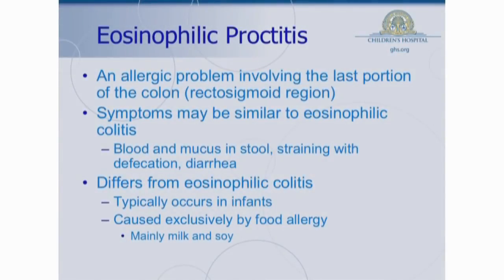Lastly, there's eosinophilic proctitis. It's an allergic problem and is usually seen in infants. It usually involves the very most distal portion of the colon, called the rectosigmoid region. It's usually associated with blood and mucus in the stool, sometimes diarrhea, sometimes straining. It differs from eosinophilic colitis as a whole in that it usually occurs only in infants and is usually caused by food allergy — in particular things in their formulas, like milk or soy proteins.